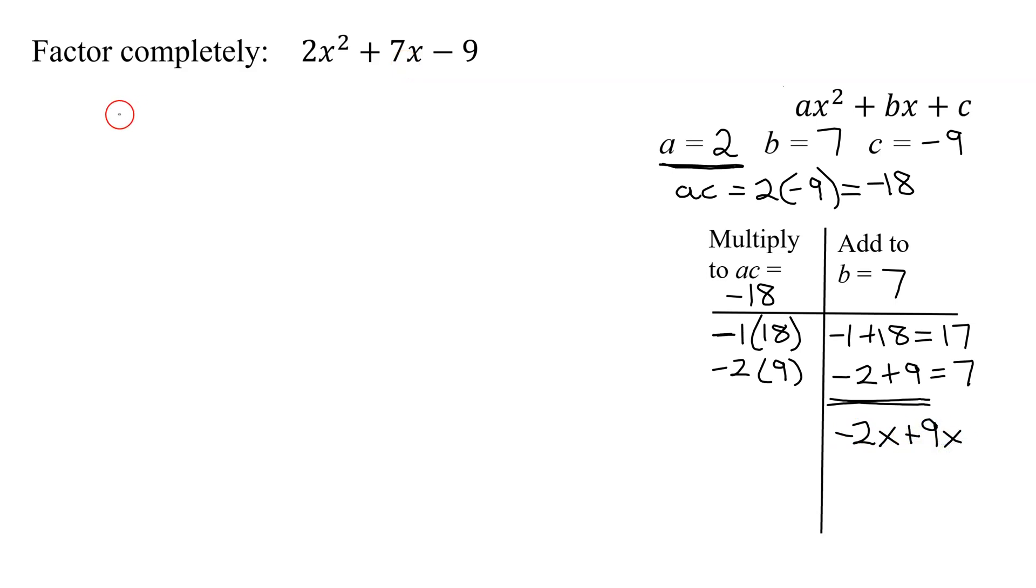So I'm going to rewrite my first term, 2x squared. But then instead of 7x, I'm going to write negative 2x plus 9x, because those both add up to 7x. Then my last term is minus 9. The reason we do this is now we have four terms. How do you factor four terms? You do it by grouping.